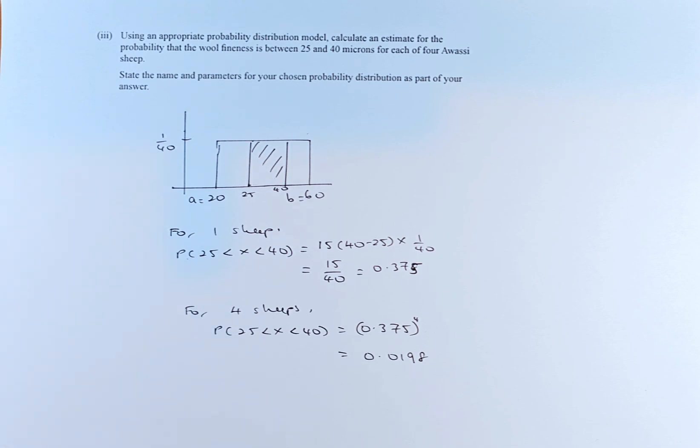Using an appropriate probability distribution model, calculate the estimate for the probability that the wool fineness is between 25 and 40 microns for each of the 4 ARINC ships. State the name and parameters of the chosen probability distribution as part of the answer.